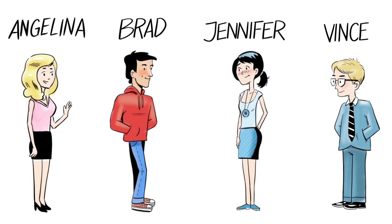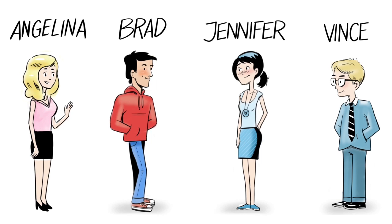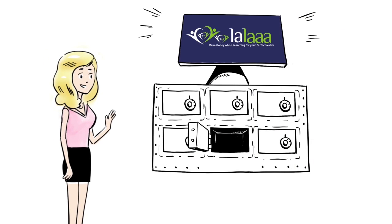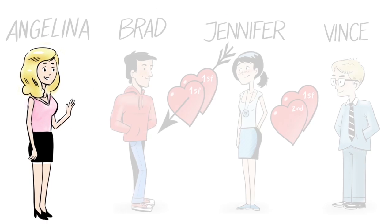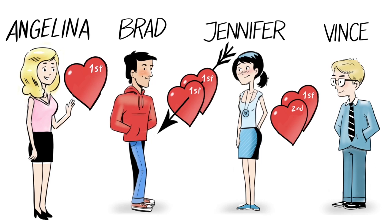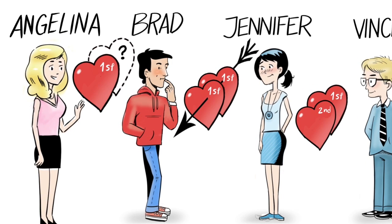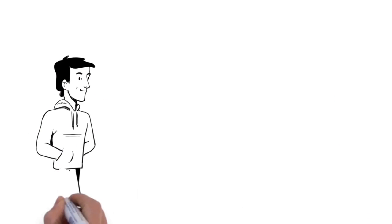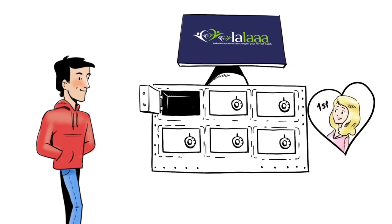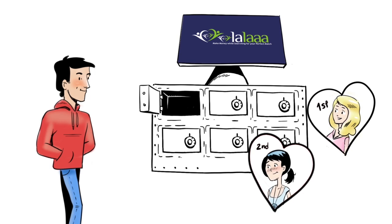Let's now add Angelina to the social situation. She, as a new member of the website, gets to list her secret preferences for free. In this situation, she also happens to rank Brad first in her secret preferences. Her arrival confuses Brad and his feelings for Jennifer, whose preferences have not been changed. Brad now wants to adjust his preferences such that Angelina appears on top, and Jennifer in second place.